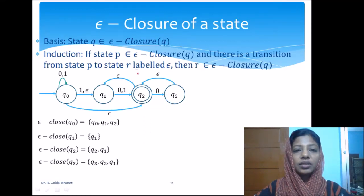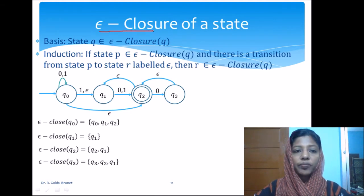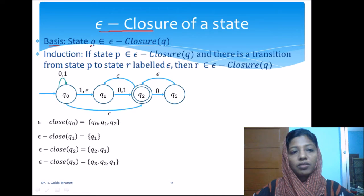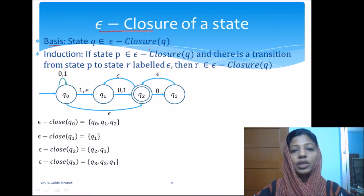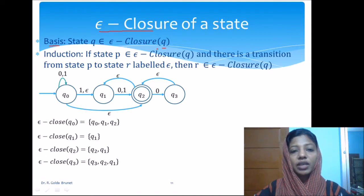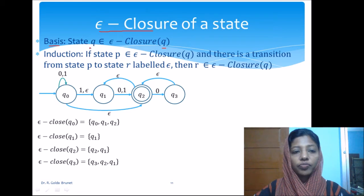Before extending the transition function to strings, let us define a function called epsilon closure of a state. It is a recursive definition and the basis goes like this: for a state q, the epsilon closure of q will include q itself. That is, q is in epsilon closure of q.